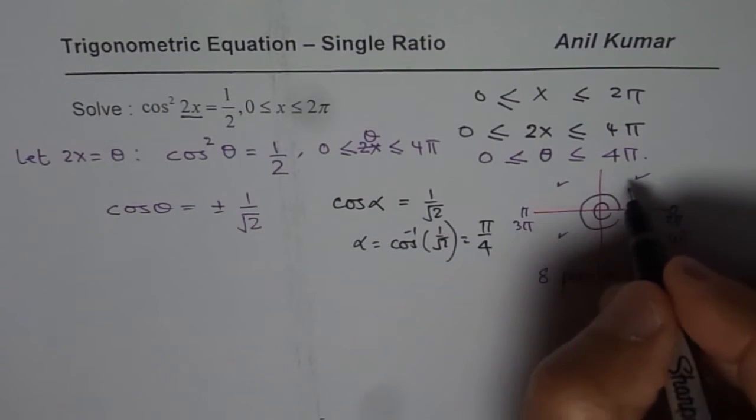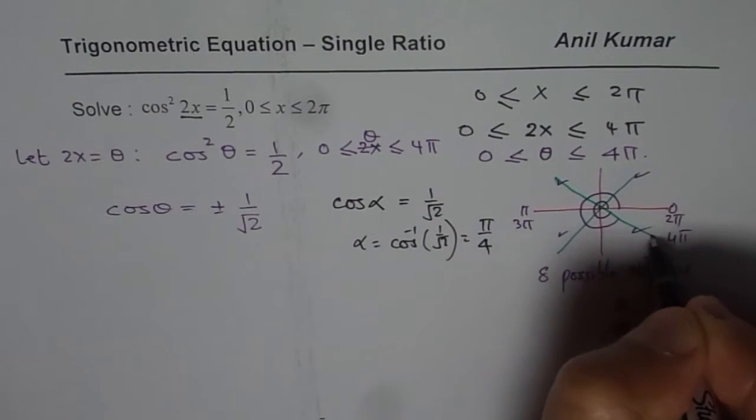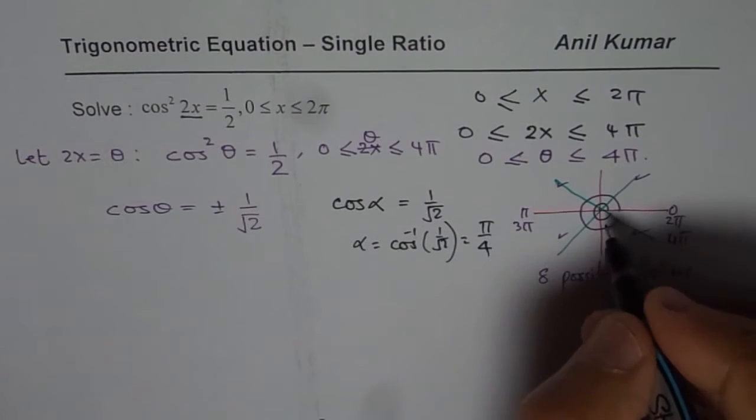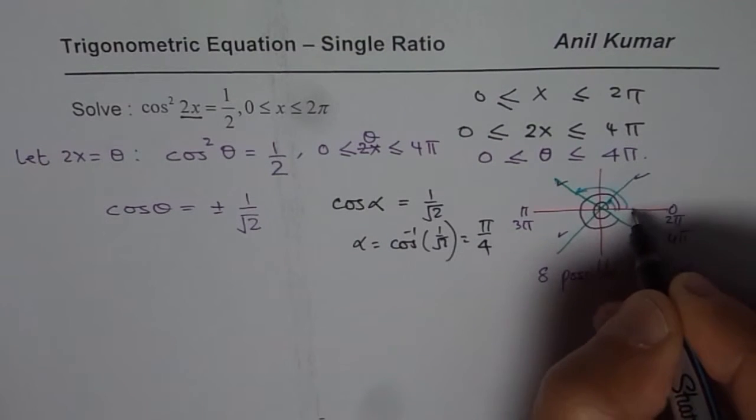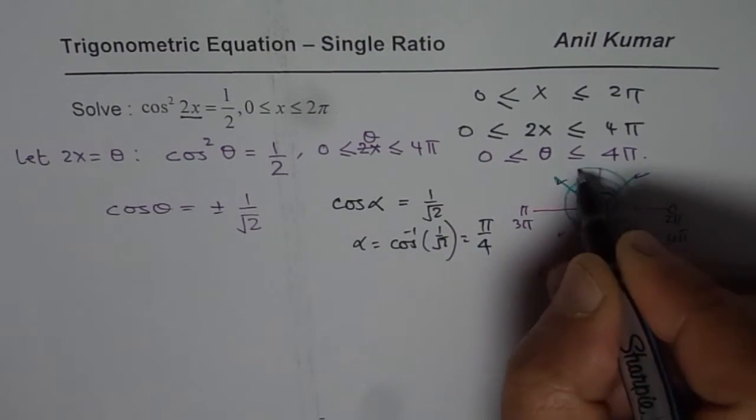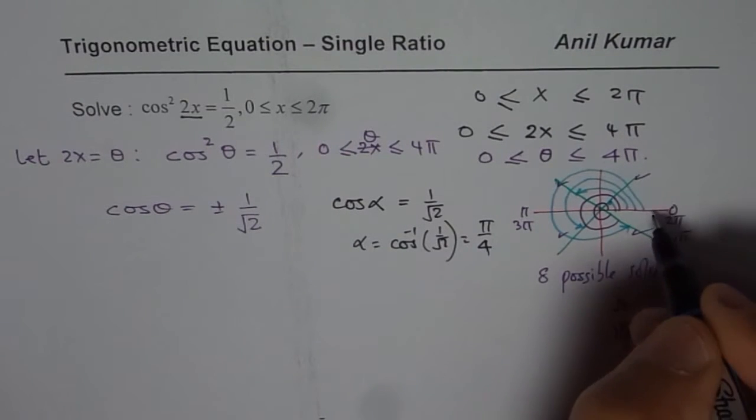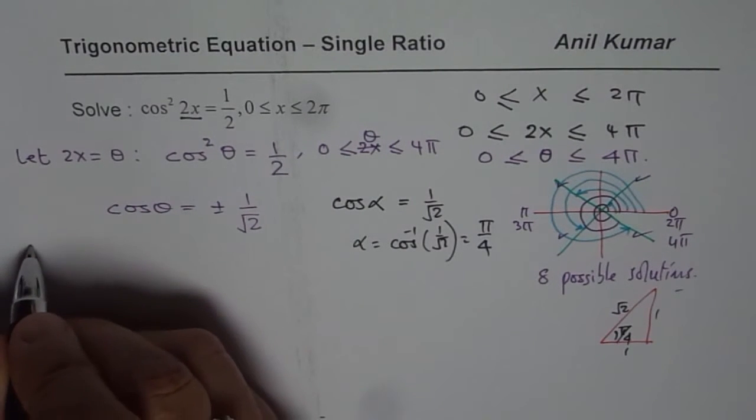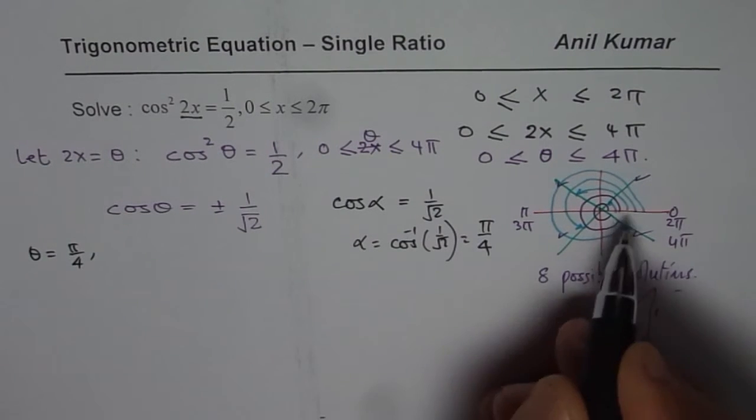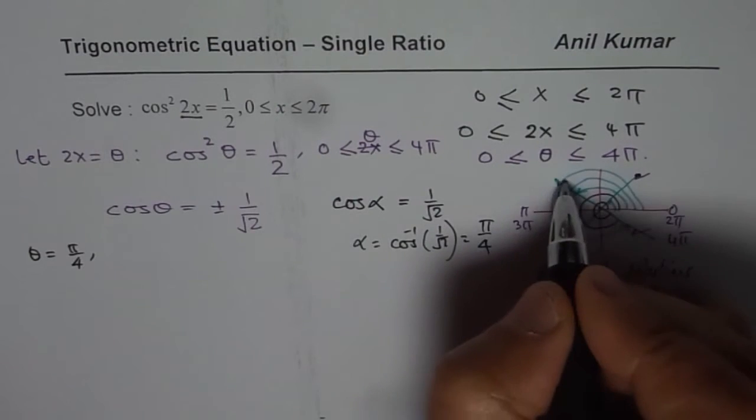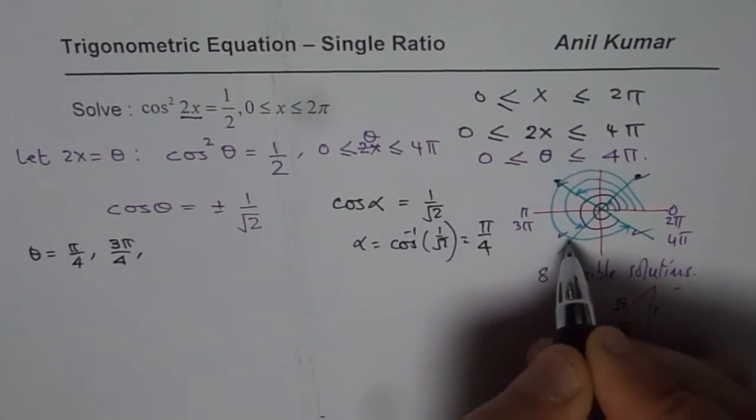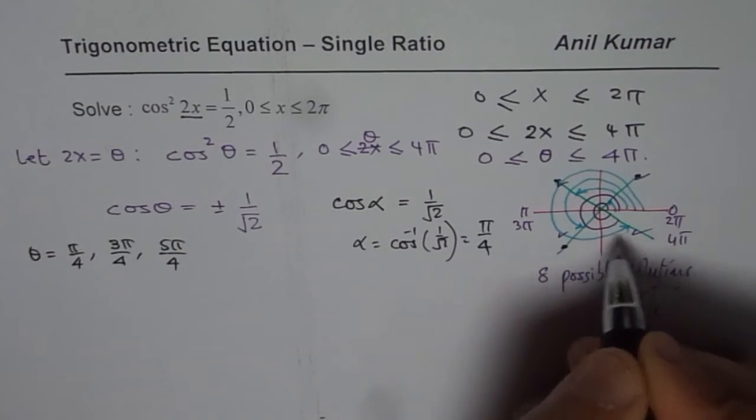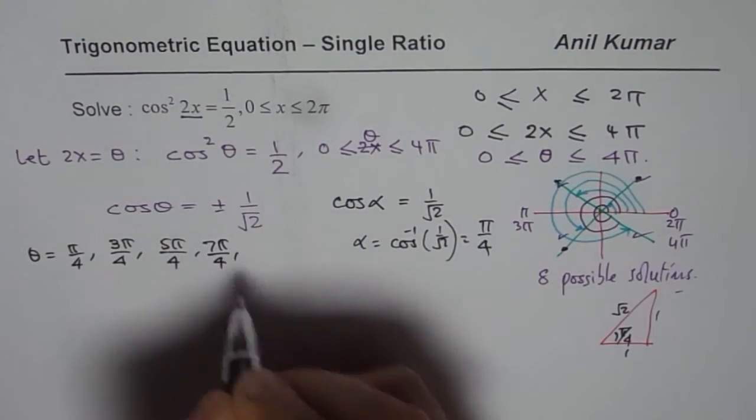So let me sketch π/4 here. It is in all four quadrants. Now our angle is π/4. That means one π/4, and this is 3π/4, this is 5π/4, and this is 7π/4. And then we have to again add 2π/4. So what we get here is θ = π/4, and then 3π/4, and then 5π/4, and then 7π/4. Now that is the first round.